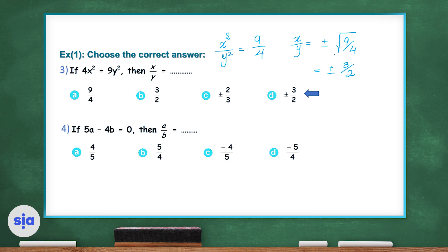Question 4. If 5A minus 4B equals 0, then what is A over B? If 5A minus 4B equals 0, then 5A is equal to 4B. So to find A over B, it's equal to 4 over 5. The right choice in question 4 is choice A.